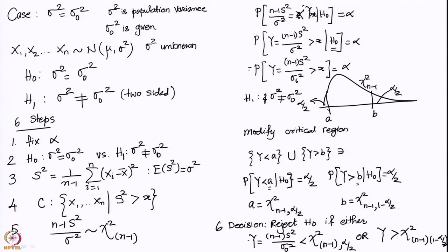To summarize the six steps: we fix alpha, state the null and alternative hypotheses, identify S-square as the correct test statistic since its expected value is the population variance, define the critical region where S-square exceeds a threshold, then find the appropriate distribution. The test statistic (n minus 1)S-square / sigma-square follows chi-square(n-1) and contains no unknown parameters.